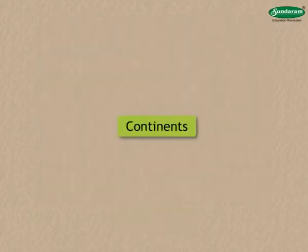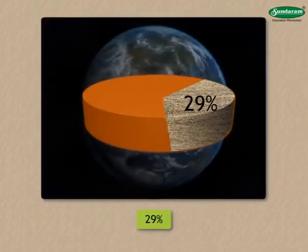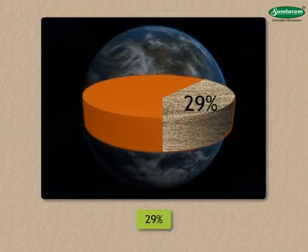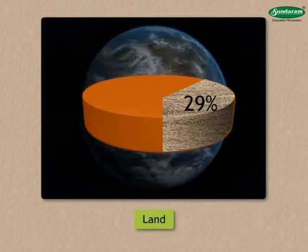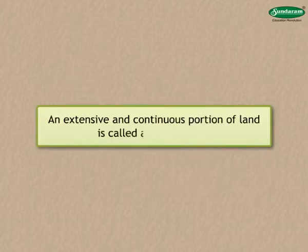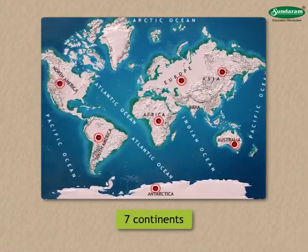Now we shall study the continents. About 29% of the earth's surface is occupied by land. An extensive and continuous portion of land is called a continent. There are seven continents.